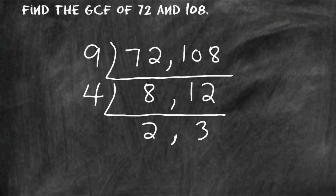The two numbers we have at the bottom are 2 and 3, and 1 is the only common factor remaining. Therefore, we can multiply the two numbers that we have on the outside, 9 and 4. And 9 times 4 is 36. So the greatest common factor of 72 and 108 is equal to 36.